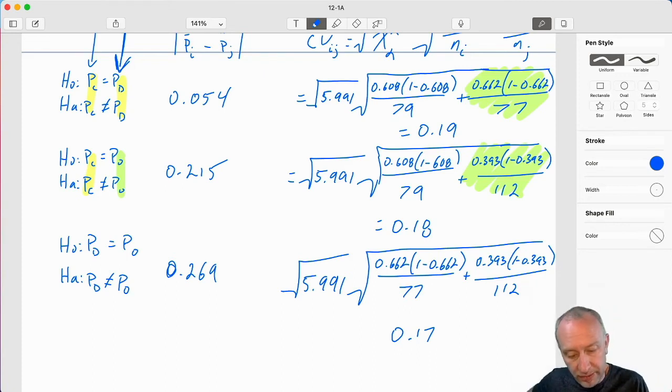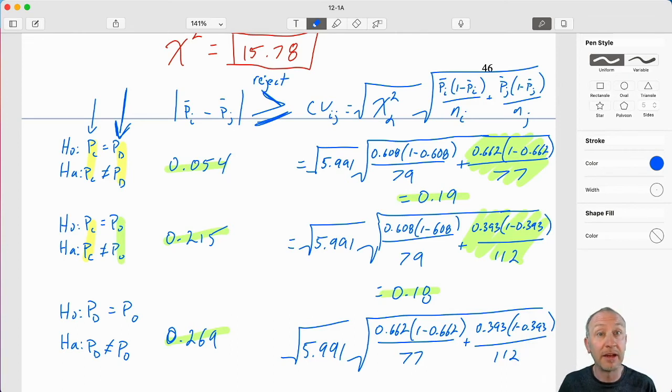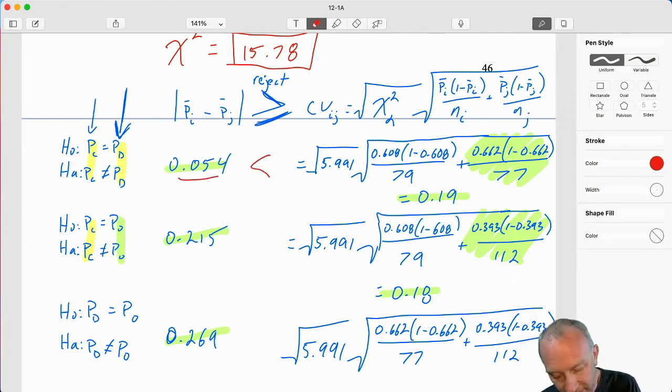We have our test statistics. We have our critical values. Our rejection rule, finally, is that if our test statistic is greater than or equal to that critical value, that is what allows us to reject the corresponding null hypotheses. If I go through each of these different tests, the first one, certainly, that test statistic is smaller than, right? 0.05, that's smaller than 0.19. Do not reject.